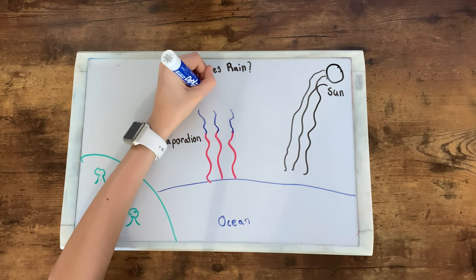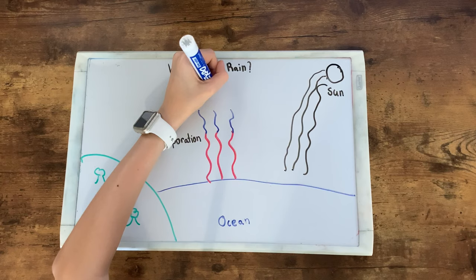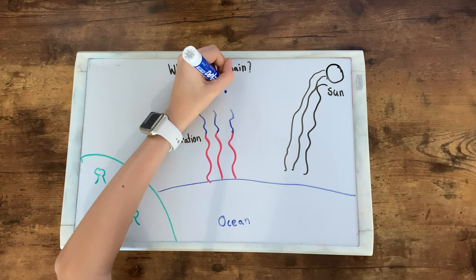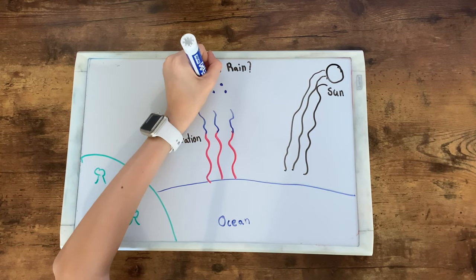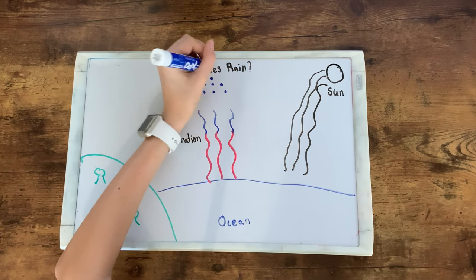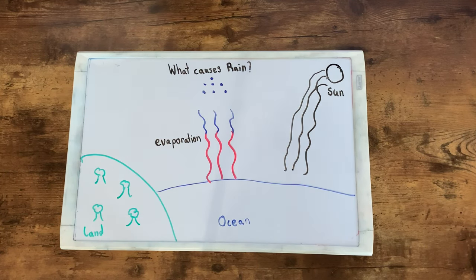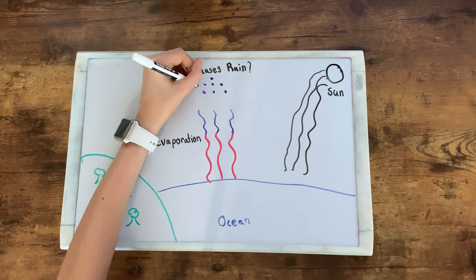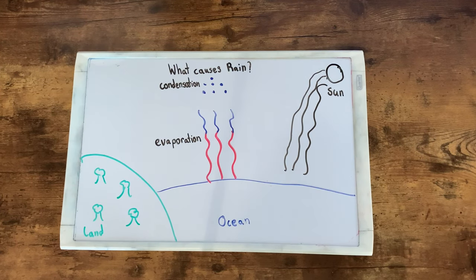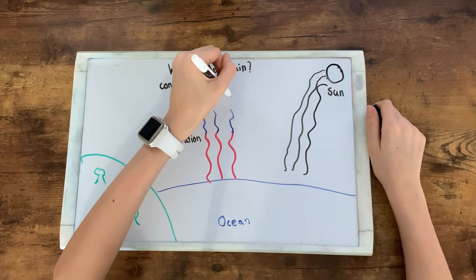So now that it's in the sky, it turns back into tiny water droplets like this. This change is called condensation, and that is the opposite of evaporation.